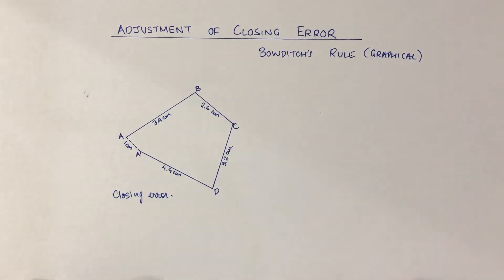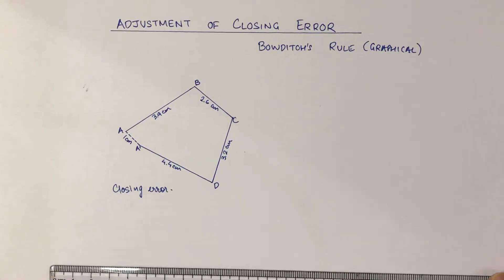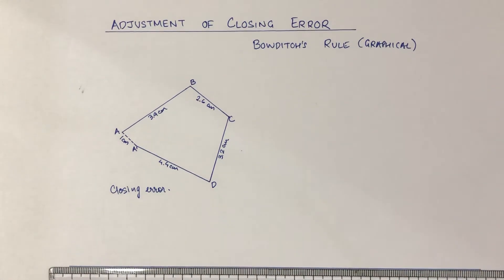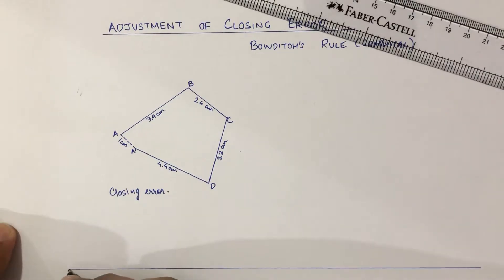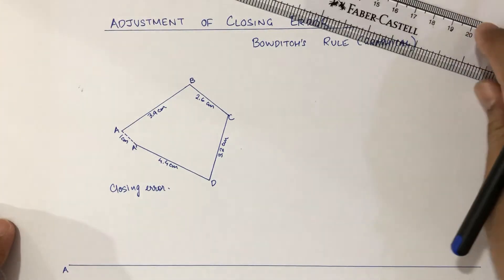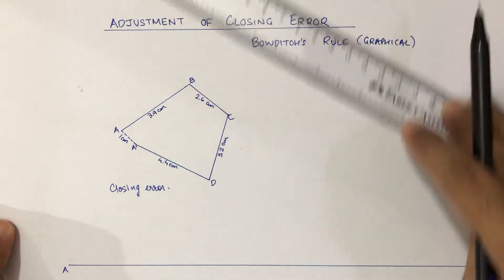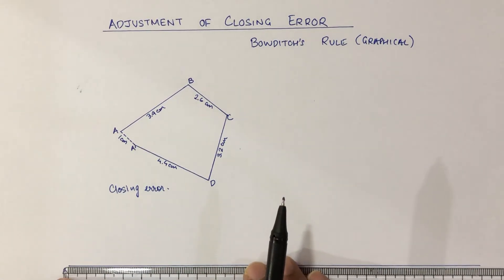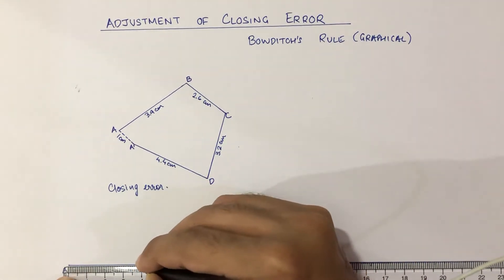Now we have to plot a straight line. Suppose this is a straight line and it starts with point A. This length AB of 3.9 centimeters is measured on the straight line, so 3.9 is marked somewhere here.